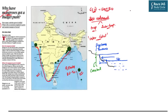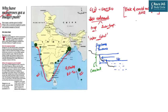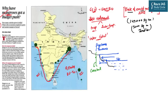According to the State of World Mangroves 2022 report, the total mangrove cover of the world is around 1,47,000 square kilometers, of which around 5,000 square kilometers are found in India. This report is published by the Global Mangrove Alliance.